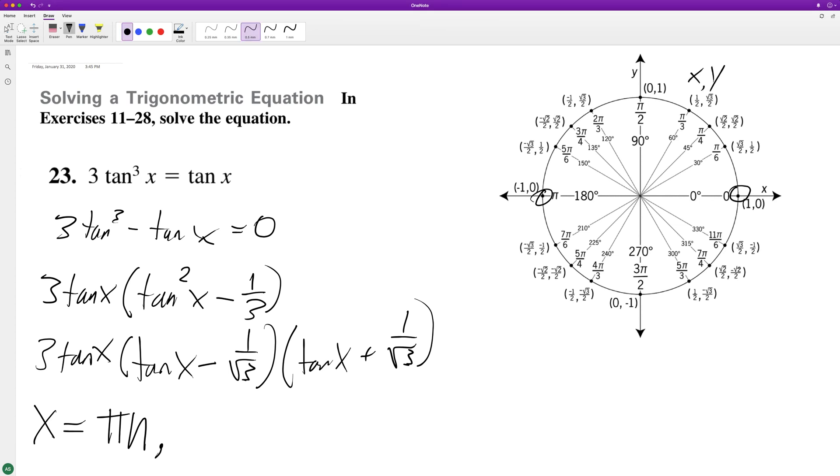For example, π/6 is going to be 1/2 over √3/2. This is the same thing as 1/2 times 2/√3. These cancel out and we get 1/√3. Usually you'd rationalize the denominator but we're just solving for these instances.